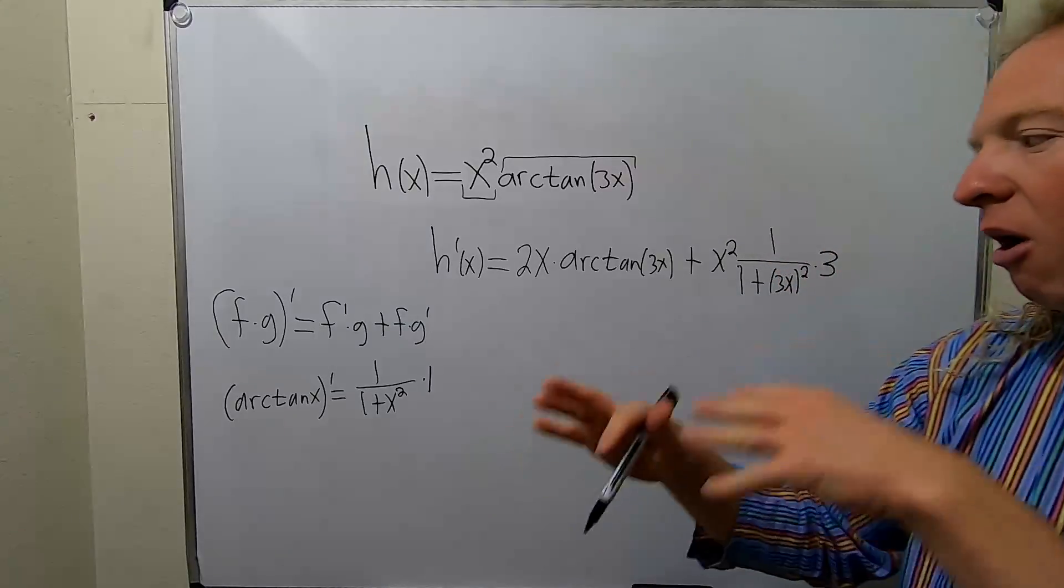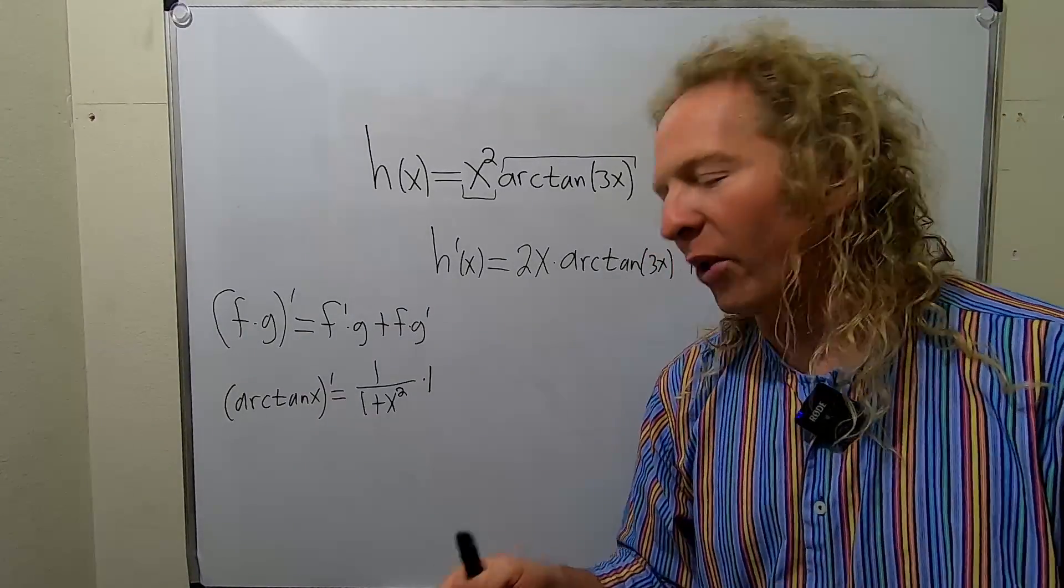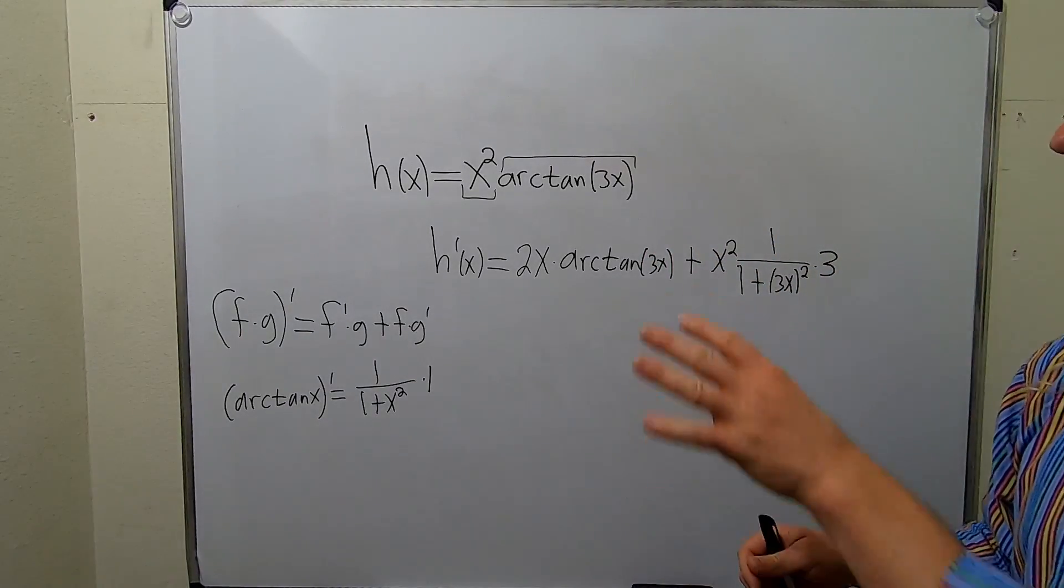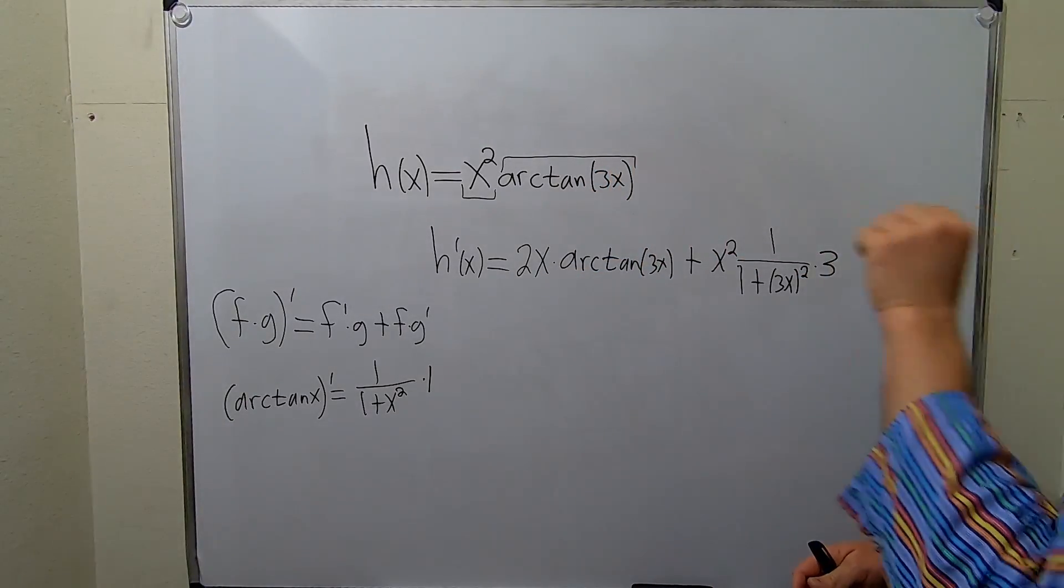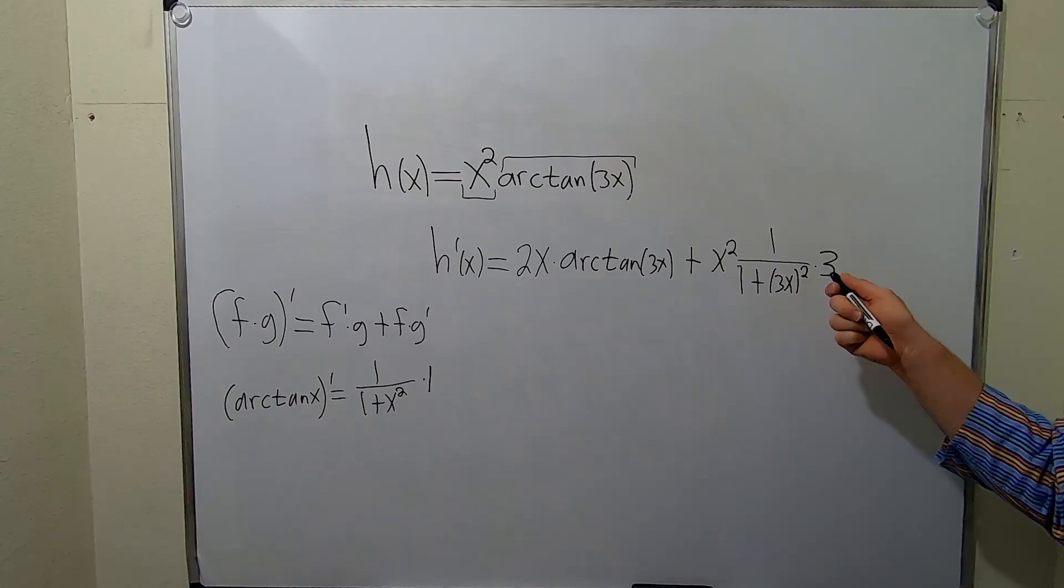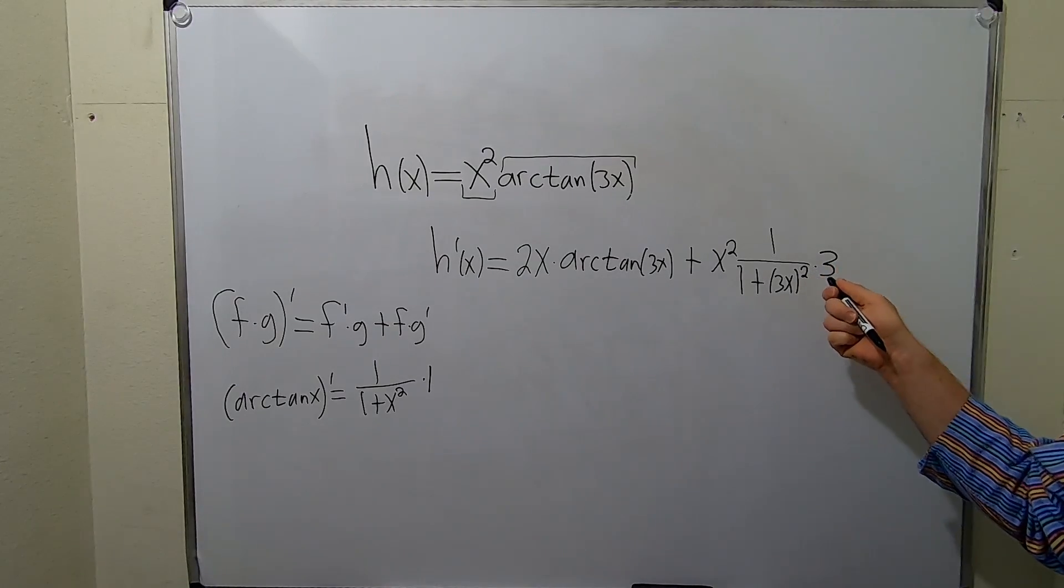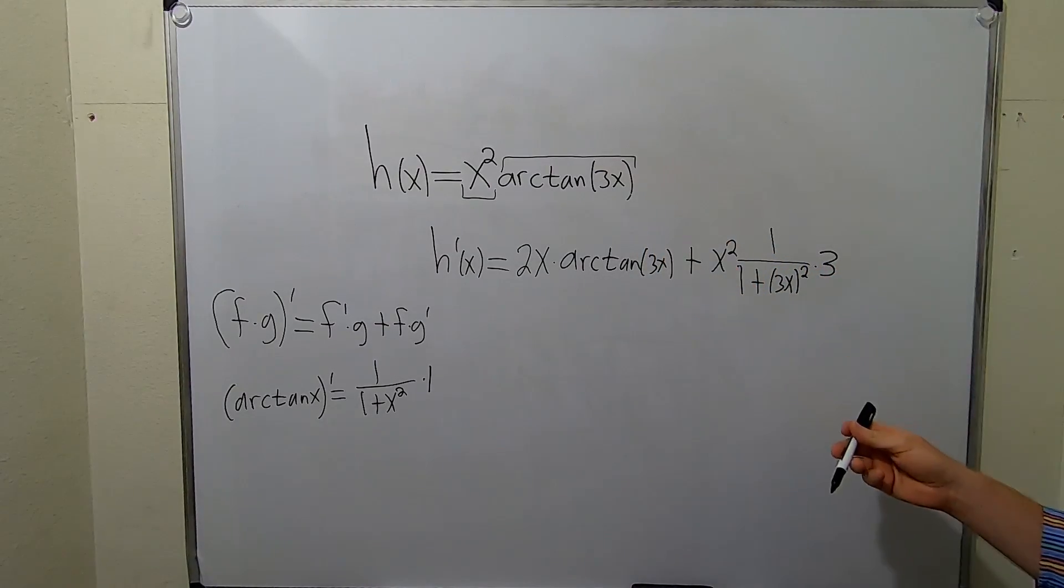So in theory, you're always kind of using the chain rule. The way I think about it is, though, whenever it's something besides x, we have to invoke the power of the chain rule. It says that we have to finish the derivative process by multiplying by the derivative of the inside. That's pretty much it.